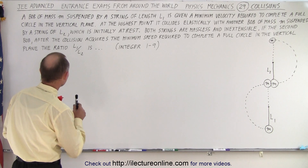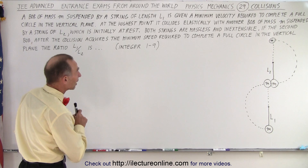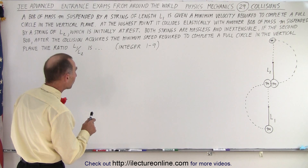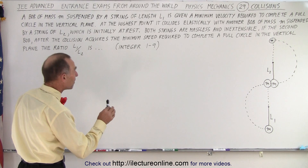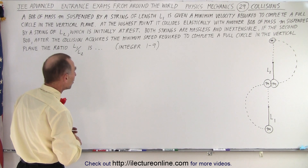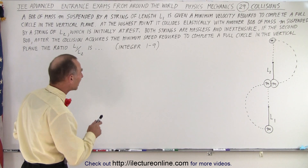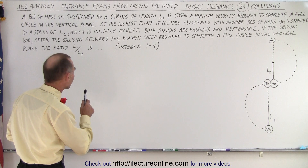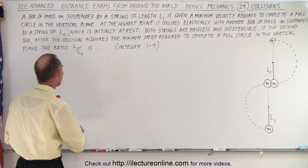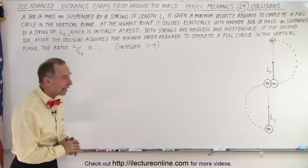A bob of mass m suspended by a string of length l1 is given a minimum velocity required to complete a full circle in the vertical plane. At the highest point it collides elastically with another bob of mass m suspended by a string of length l2, which is initially at rest. Both strings are massless and inextensible. If the second bob after the collision acquires the minimum speed required to complete a full circle in a vertical plane, the ratio of l1 to l2 is some integer from one to nine.